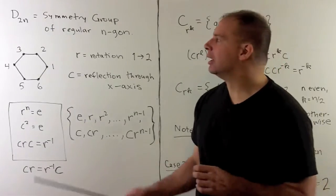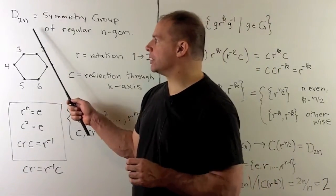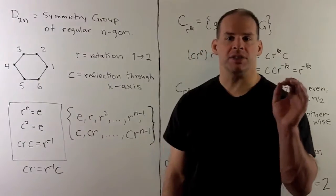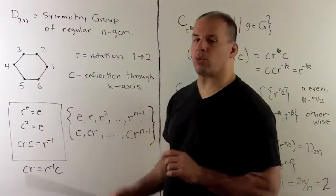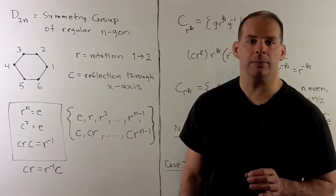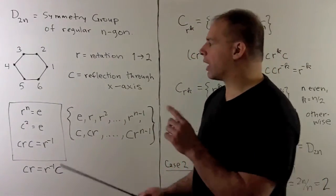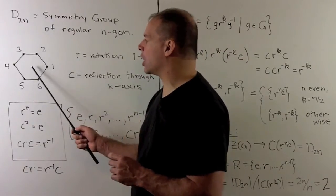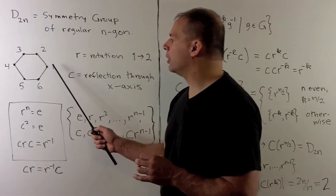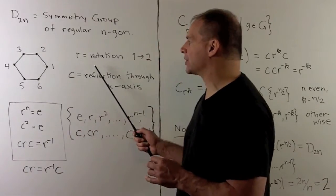Recall the dihedral group with 2n elements, written D sub 2n, sometimes written D sub n. It's the symmetry group of a regular n-sided polygon. For reference, here we have a regular hexagon. We'll assume it's centered at the origin. I'll always put the vertex labeled 1 on the positive real axis.